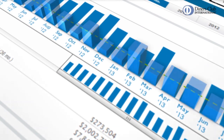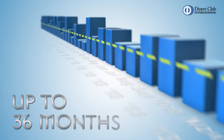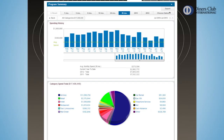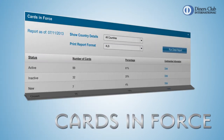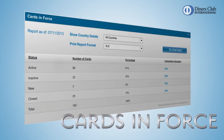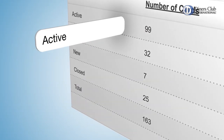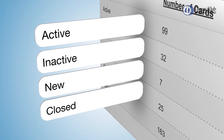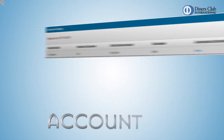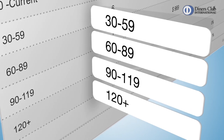The program summary displays spending over time, in a variety of timeframes, and through a cross-section of vendors. Cards in Force shows you which employees are using their cards and how — who's active, inactive, who's new and what's closed. Account Aging gives you a snapshot of past due accounts in the timeframes you need.